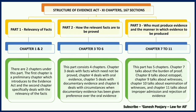Finally, in Part 3, we are understanding who must produce evidence and the manner in which evidence is to be produced. To understand this, we have five chapters: chapter 7, 8, 9, 10, and 11. Chapter 7 deals with burden of proof. Chapter 8 talks about estoppel. Chapter 9 on witness. Chapter 10 on examination of witness. And finally, chapter 11 talks about improper admission and rejection of evidence.